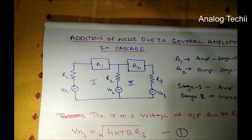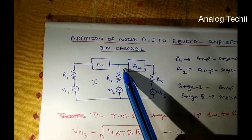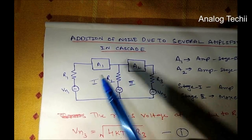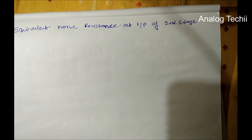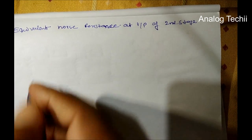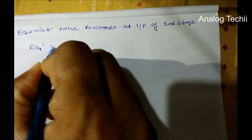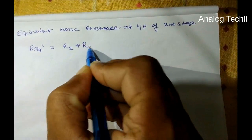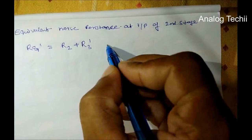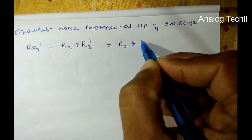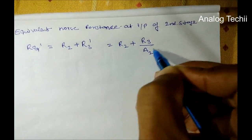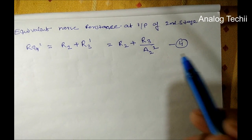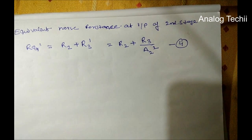Now, assuming that this noise VN3' has come from the R2' stage only, we will calculate R equivalent at this place. The equivalent noise resistance at the input of the second stage, represented by R_equivalent', equals R2' plus the noise voltage generated at the output of the third stage, that is R3'. This can be represented as R2' plus, from equation 3, R3' / A2² square. This is expression 4 — the equivalent resistance at the input of stage 2.